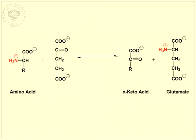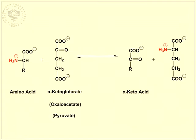Most often, the amino group acceptors are alpha-ketoglutarate, oxaloacetate, and pyruvate. When in transamination the amino group is accepted by alpha-ketoglutarate, it is converted to glutamate and a new keto acid is produced.